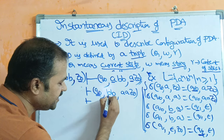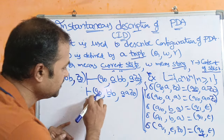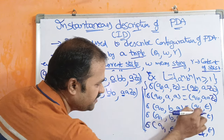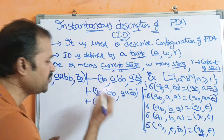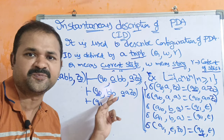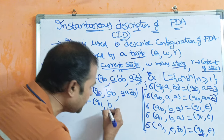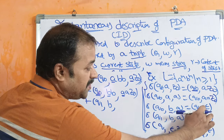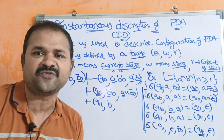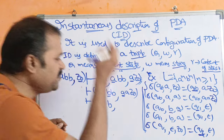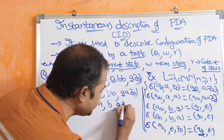Next, the current state is Q0, input symbol is B, and the stack's top symbol is A. So (Q0, BA) means the next state is Q1 — we change the state from Q0 to Q1. This B is completely processed, the remaining string is B, and epsilon indicates we perform a pop operation, so this A is popped from the stack. The remaining stack content is AZ0.